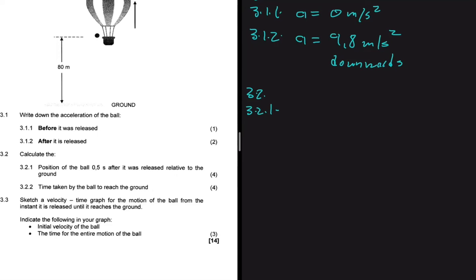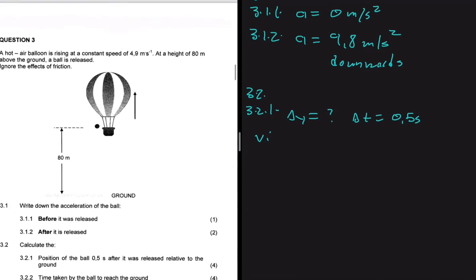Moving to 3.2.1, let's calculate the position of the ball 0.5 seconds after it was released, relative to the ground. Let's gather the information we have and decide which equation to use. We're looking for delta y, and we have delta t equals 0.5 seconds.